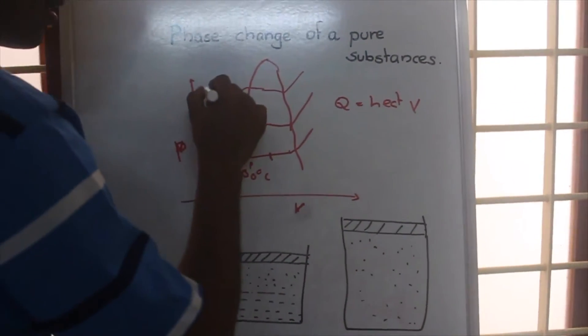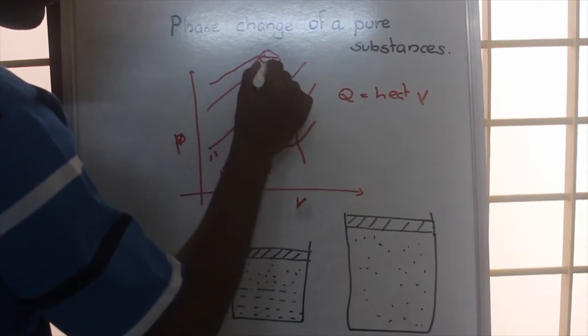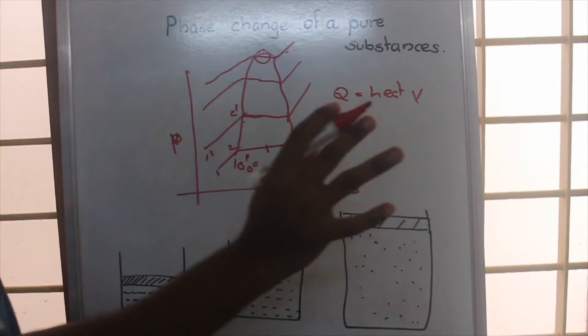If you are heating the liquid, after this particular point there will be liquid and vapor interface. Then after this particular line, there will be only vapor.